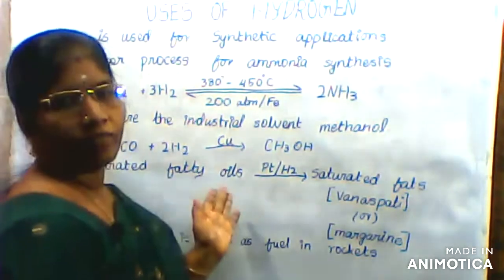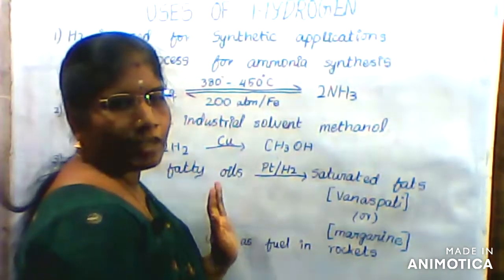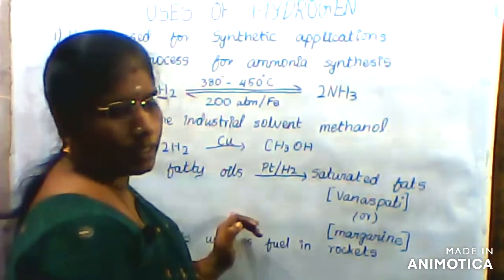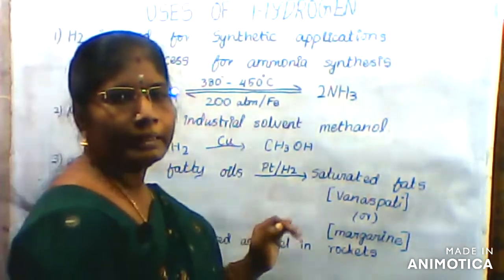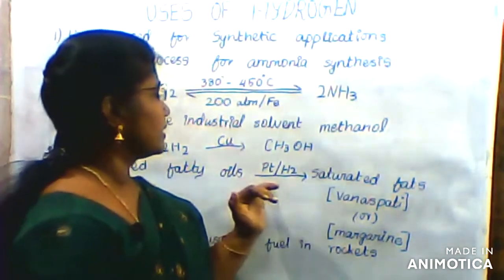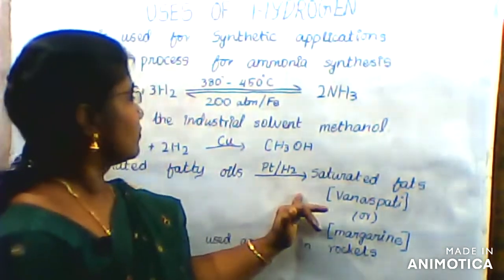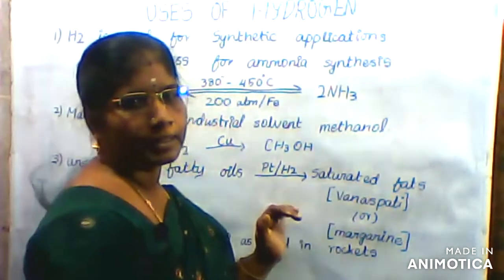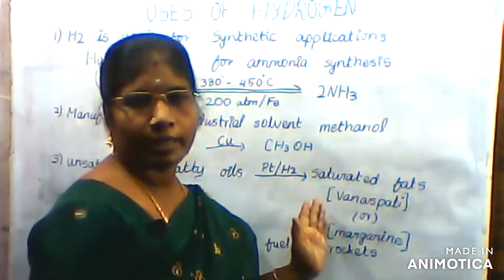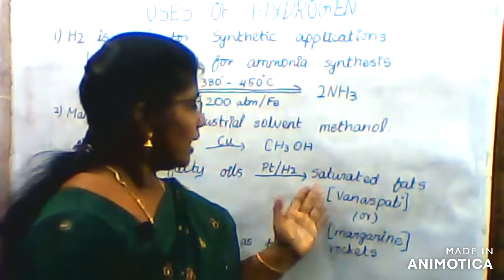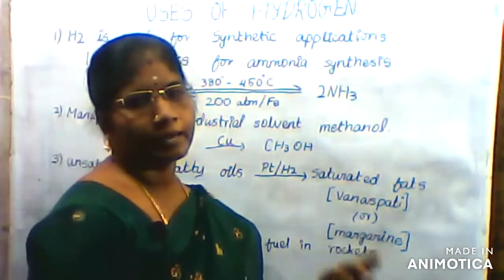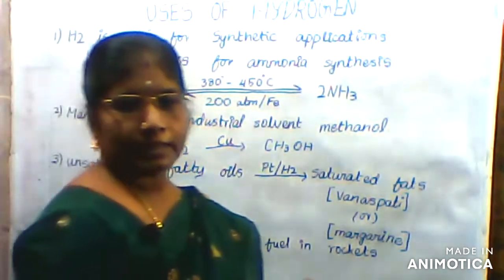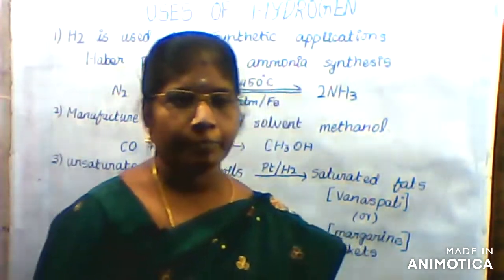Unsaturated fatty oils are hydrogenated using platinum as a catalyst and hydrogen. This converts unsaturated fatty oils into saturated fats. Saturated fats are used to produce margarine. Hydrogen is very useful and it is very important to use.